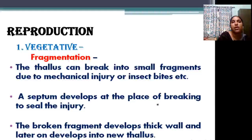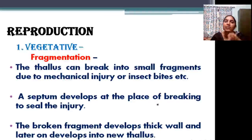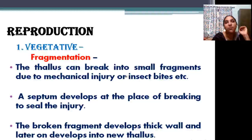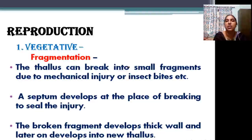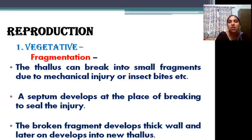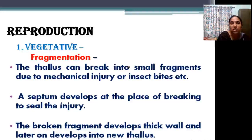Reproduction is vegetative, asexual, and sexual. Vegetative reproduction is by fragmentation — breaking the entire thallus into small pieces, perhaps by injury or insect bite. Then a septum develops in the broken portions and they develop into new thalli.